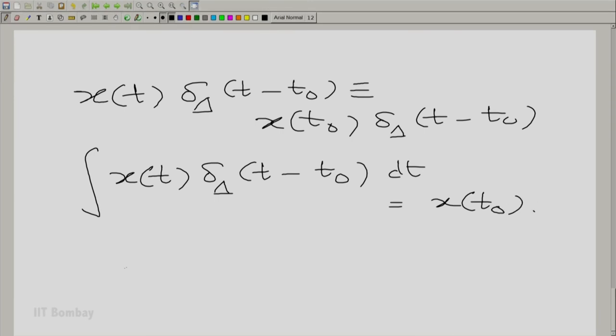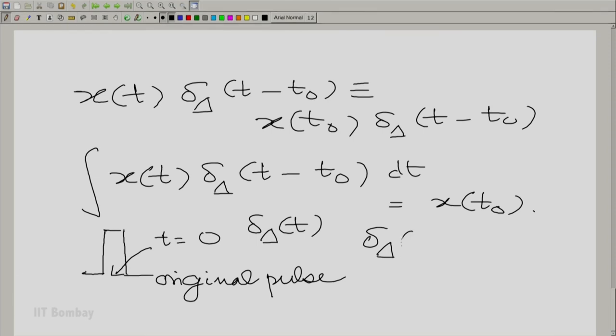Now, let us take this particular pulse that we drew. Let us assume that it is symmetric about t equal to 0, the original pulse. Let us call it delta delta t and let us note that delta delta t is equal to delta delta minus t. If we assume that it is centered at 0 as we have done here.